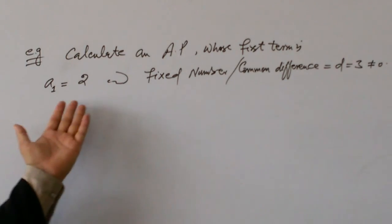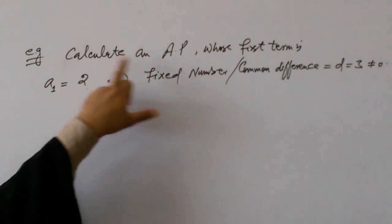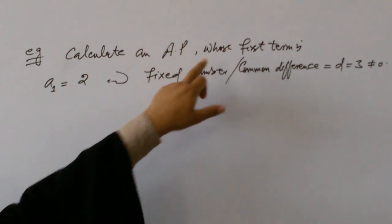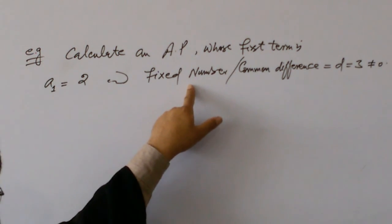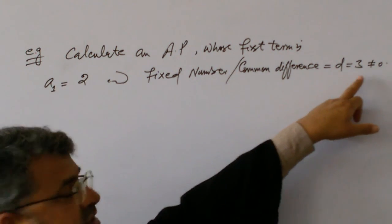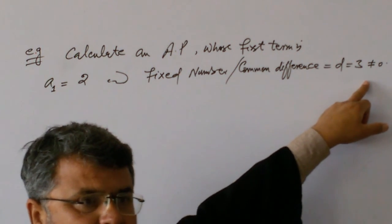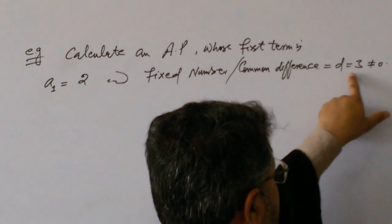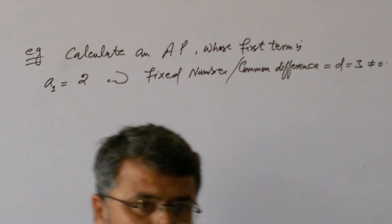For example: calculate the arithmetic sequence whose first term A1 is 2 and the fixed number — also called the common difference — D equals 3, which is not equal to zero. The condition is that the common difference will never be equal to zero.